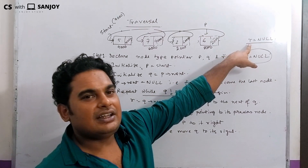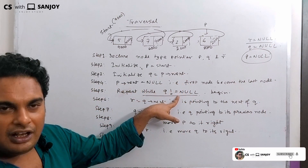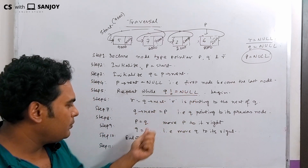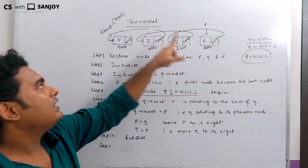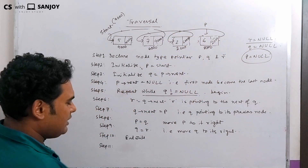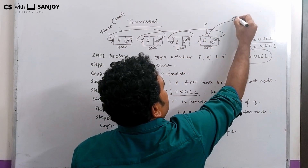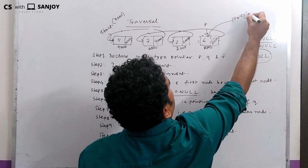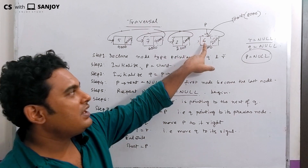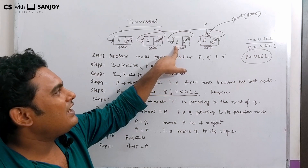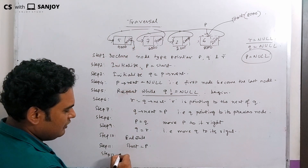Q equals to R. Q not equals to null — while loop ends. Now P points to the last node; that first node becomes the new first node. Start equals to P. Start pointer modified to specified address 8000.